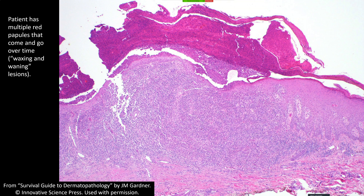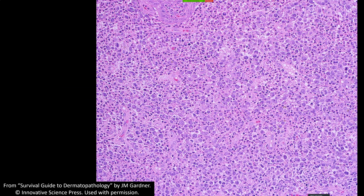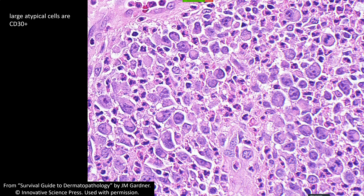Now this patient also has multiple red papules that wax and wane over time — same clinical story — but microscopically, whoa: we have a big ulceration with crust on top, and then a very top-heavy infiltrate, way more dense. Even from low power you can see these monster, ugly, huge cells. Going close, it's like a sheet of the nastiest, biggest cells you can imagine — mitoses everywhere. Well, the patient has multiple papules that go away over time, and these are all CD30-positive, so this would also be lymphomatoid papulosis.